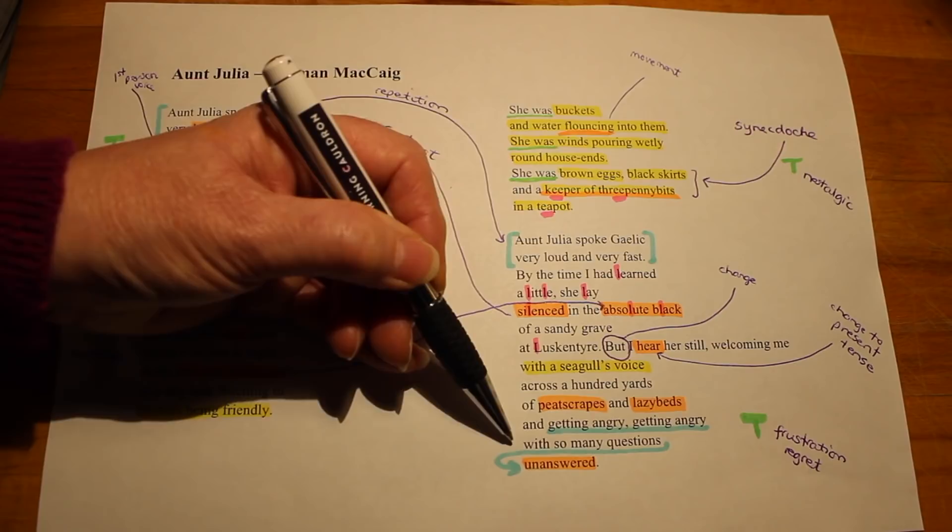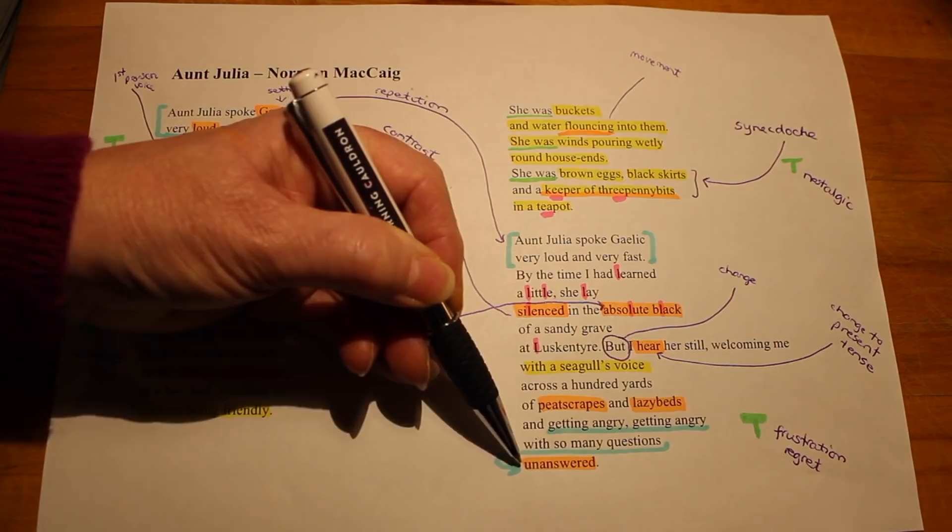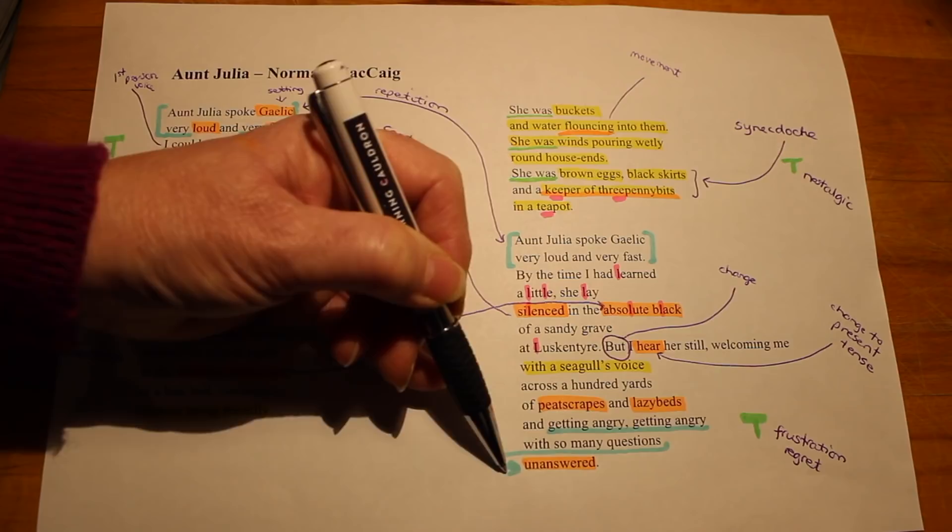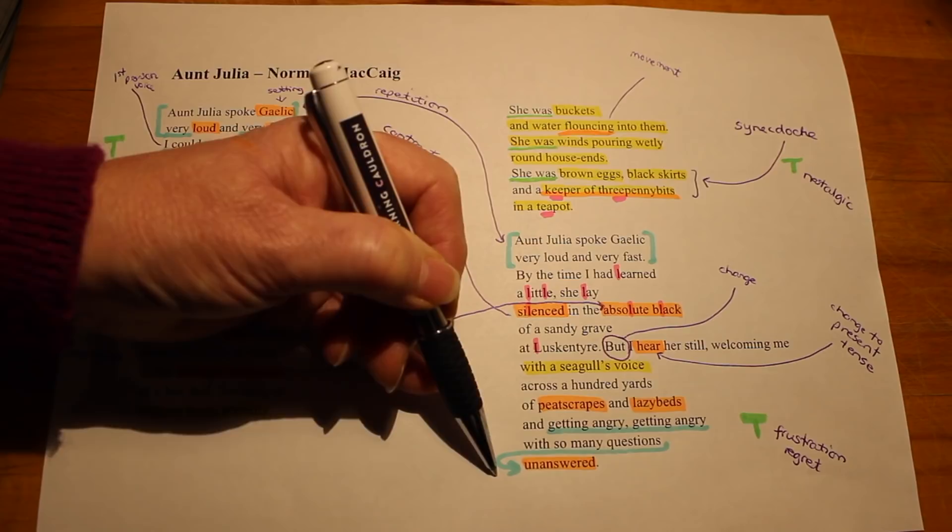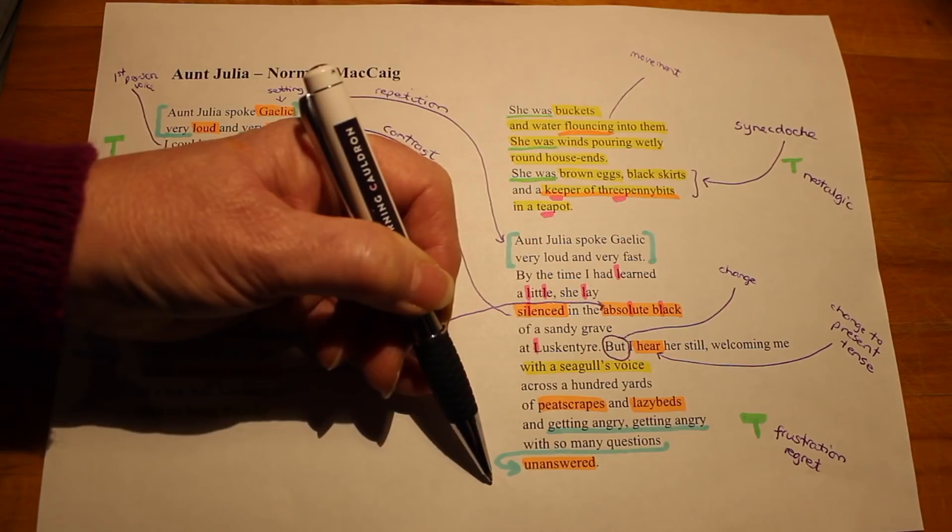And then this lovely enjambment, leaving the word unanswered, loud and clear at the end of the poem. And that basically sums up the whole poem, this lack of communication during her lifetime and his regret now that they will at no point be able to answer these questions that they wanted to ask each other. I hope that's been helpful. See you next time.